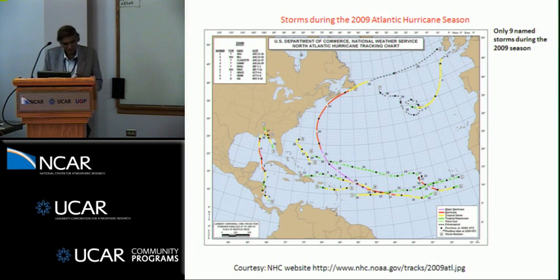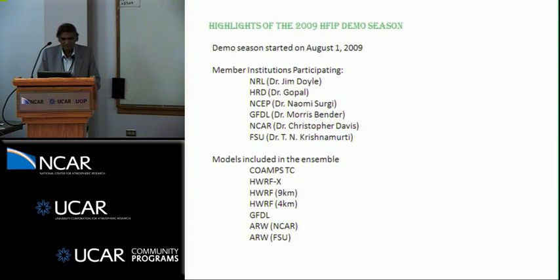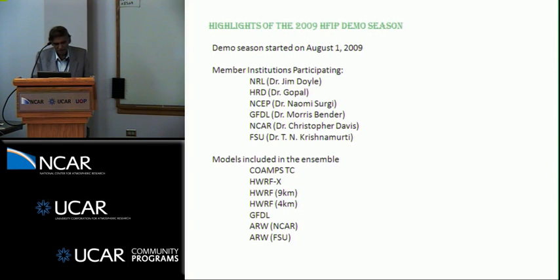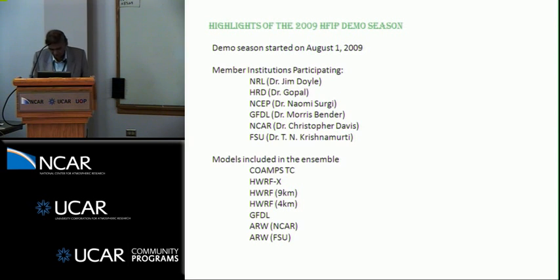Cross-validation means you make the statistics out of the storm you're not forecasting and then use it for the storm you are forecasting. The participating groups were NRL, HRD, NSEP, GFDL, NCAR, and Chris Davis. We also ran at FSU one of the ARW versions with our own choice of physics. In effect, we had seven models: the COAMPS, HWRF-X from HRD, two versions of the HWRF from EMC, the GFDL, Chris Davis' ARW, and the FSU ARW.